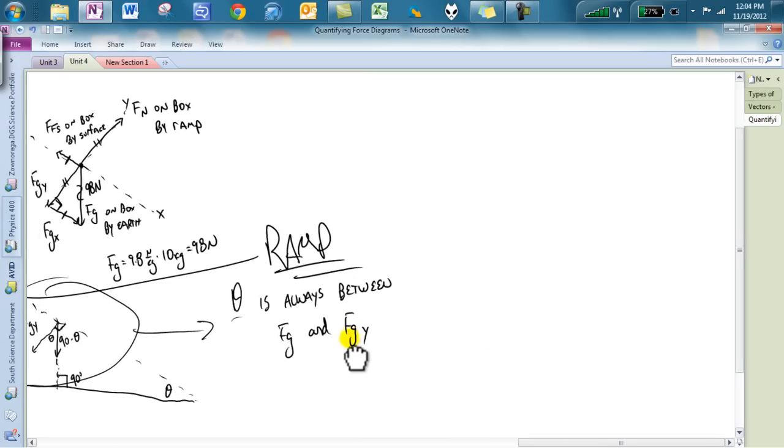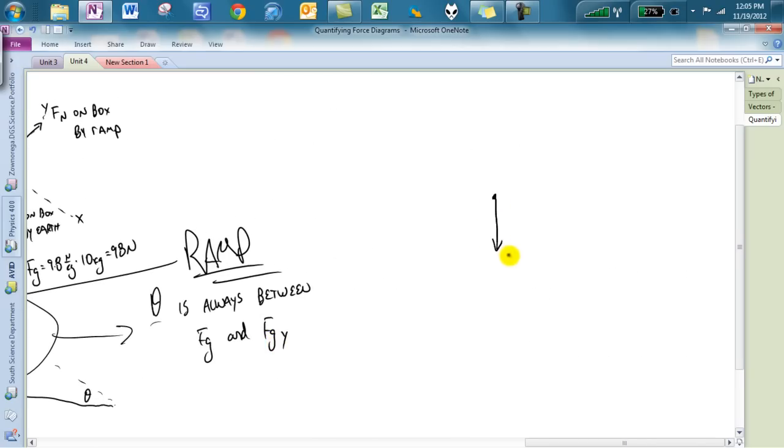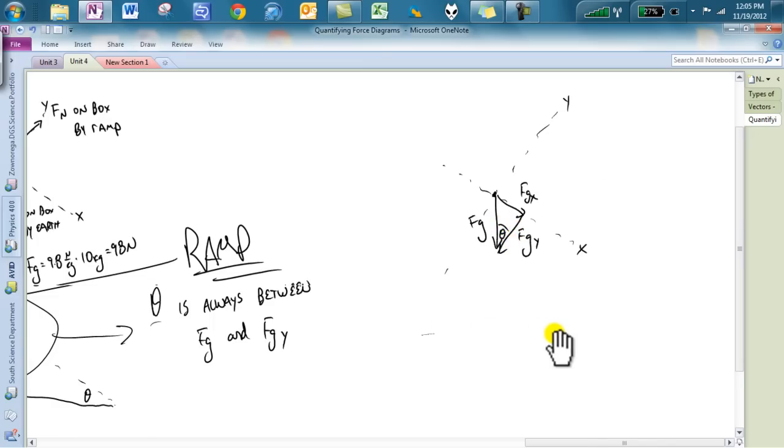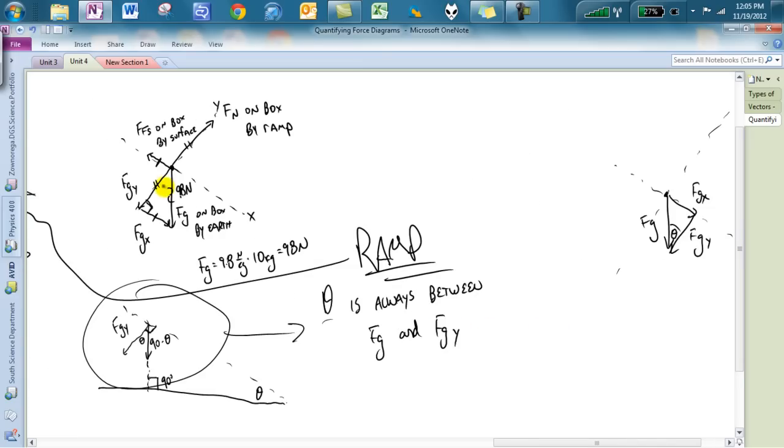So that means if I were to draw in any Fg, no matter what the situation is in terms of a ramp, if I draw in even my Fgx going this direction and my Fgy going this direction, you notice that, again, as long as this is X and this is Y, there's a couple of situations you've got to just make sure that you have your X is always the axis that the ramp is at. That means theta is going to sit between Fg and Fgy, so it sits down there. Notice in this other diagram, theta is going to sit right in there, between Fg and Fgy.